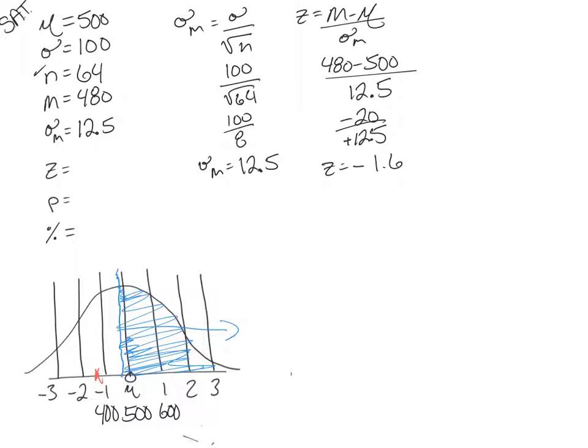So we look up 1.6 in our unit normal table. Because again, we're looking in the body, we're looking in the body part of it, because we're trying to find out what's the probability of this group of 64 people would be greater than 480. So we're going to look in the body, look in the B for body, the B column.